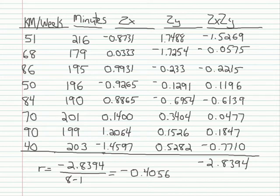And the result is negative 0.4056. The relationship between the kilometers run per week and the marathon finish time in minutes is a moderate correlation of negative 0.41.